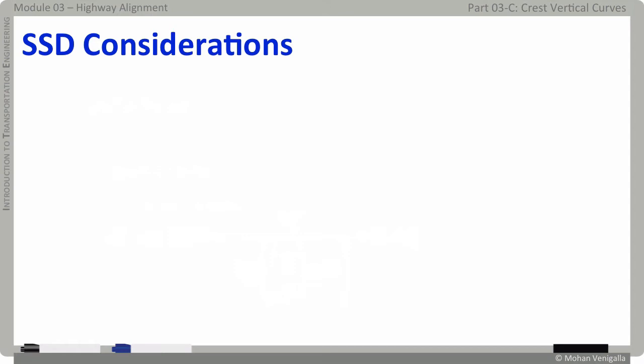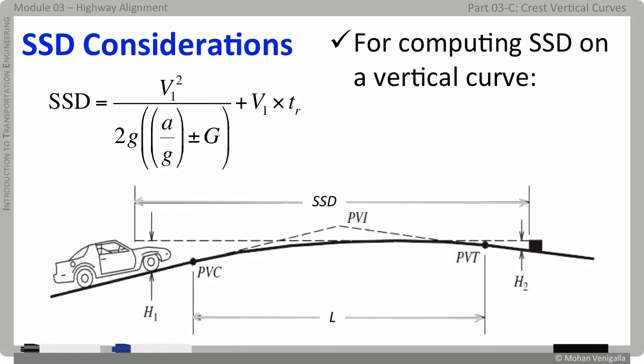We know the equation for stopping distance is this, which depends on speed v1 and grade g. We also note that each vertical curve has two grades, g1 and g2. In that case, which grade should you consider for SSD computation? Is that upward grade g1, where the braking distance will be less than the braking distance on a flat road, or is it downward grade g2, where the braking distance will be higher than that on a flat road? Intuitively, we will say negative grade because we want to be on the safe side. In this case, g2 requires more stopping distance and we want to be on the safe side. Therefore, we might be inclined to use g2.